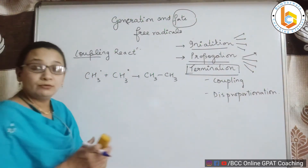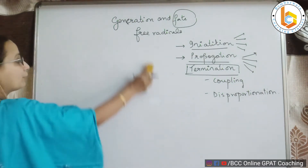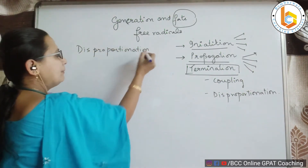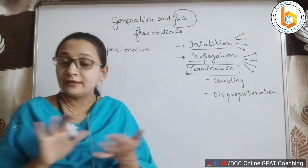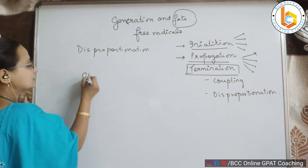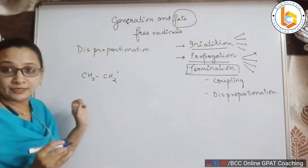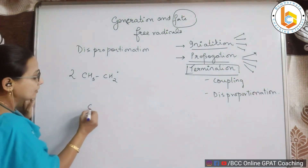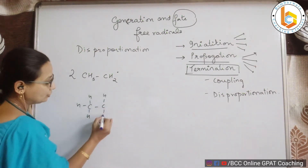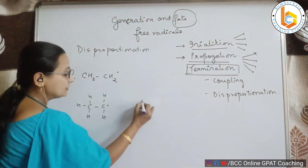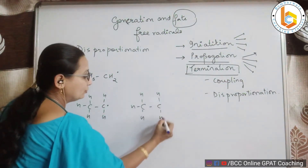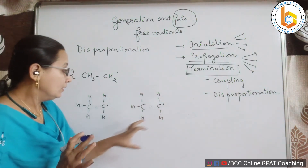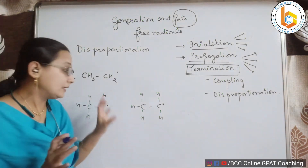Now let us talk about the second reaction which is referred to as disproportionation. Disproportionation means improper distribution, and by that the reaction can also get terminated. For example, I take two CH3CH2 free radicals — that is, two ethyl free radicals.